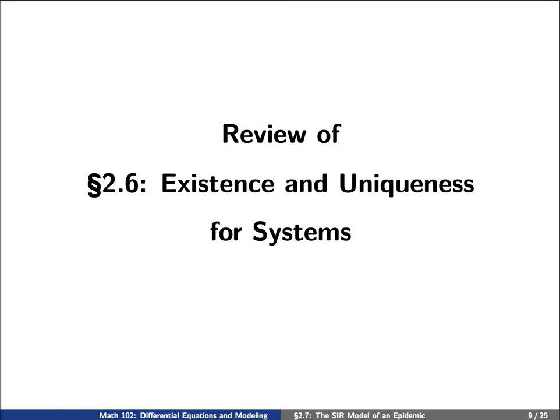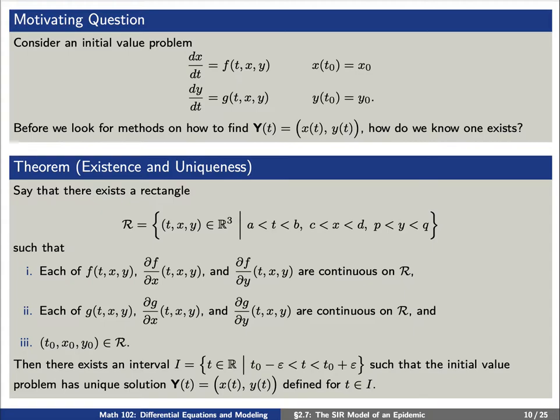We begin with a motivating question. Say that we have an initial value problem, dx/dt equals f of (t,x,y) and dy/dt equals g of (t,x,y), where x(t0) equals x0 and y(t0) equals y0. Before we look for methods on how to find the solution Y(t), which is (x(t), y(t)), how do we know that one exists?